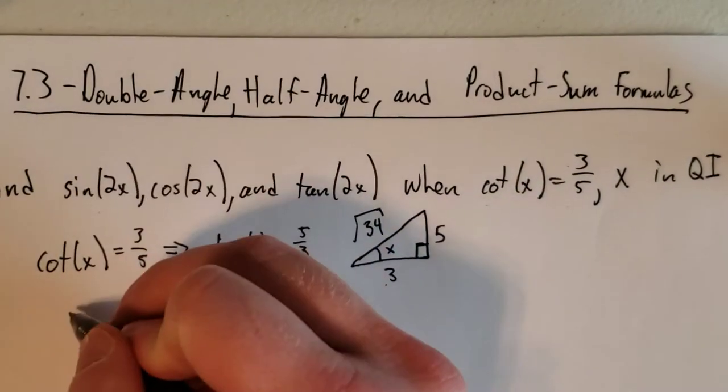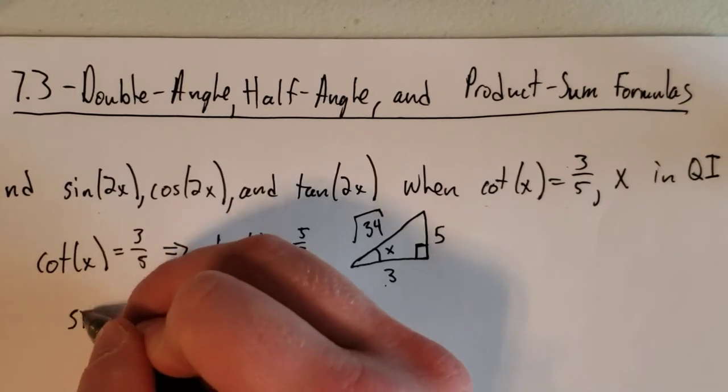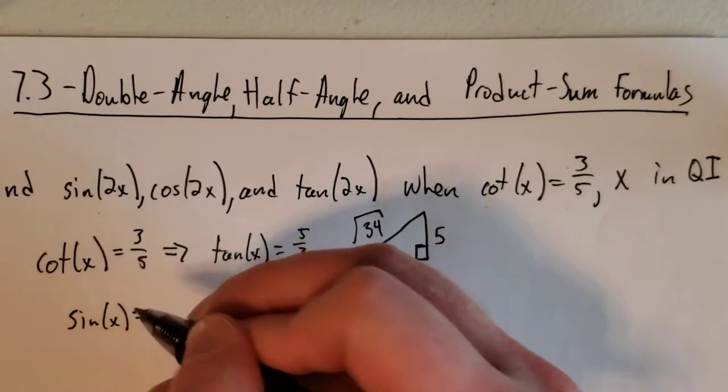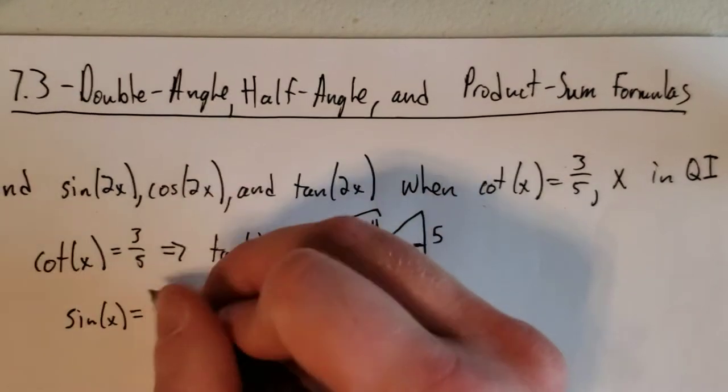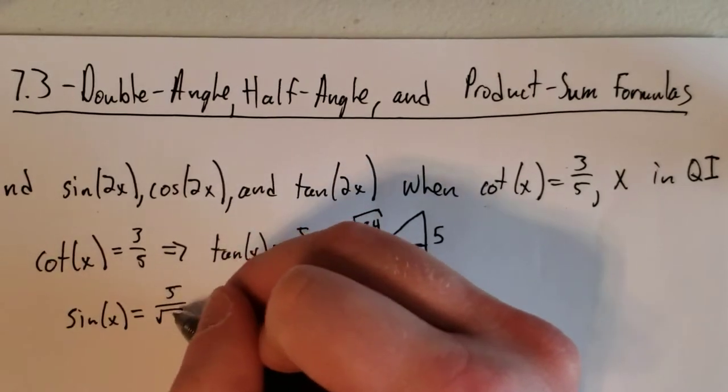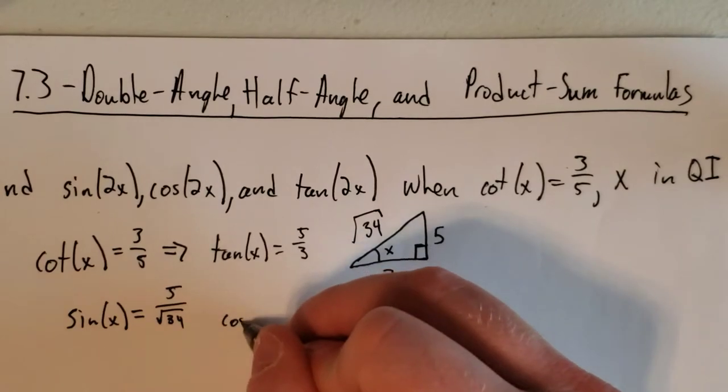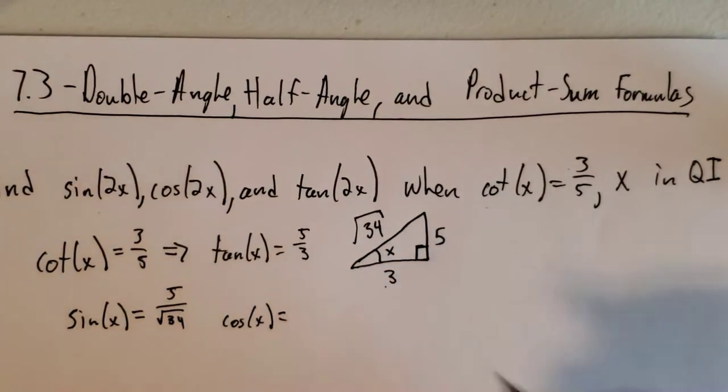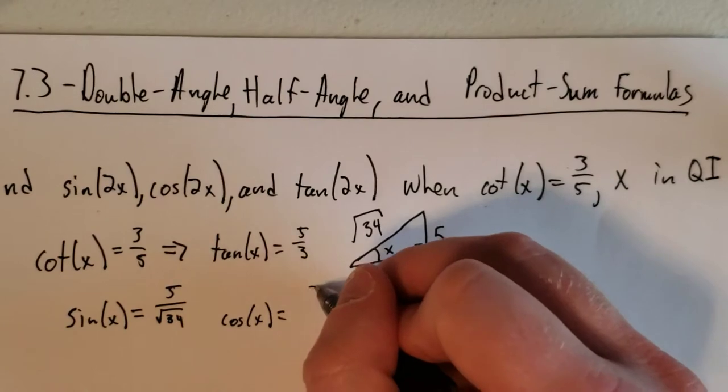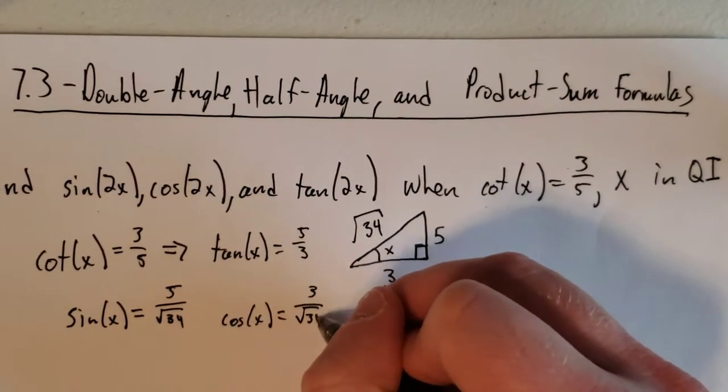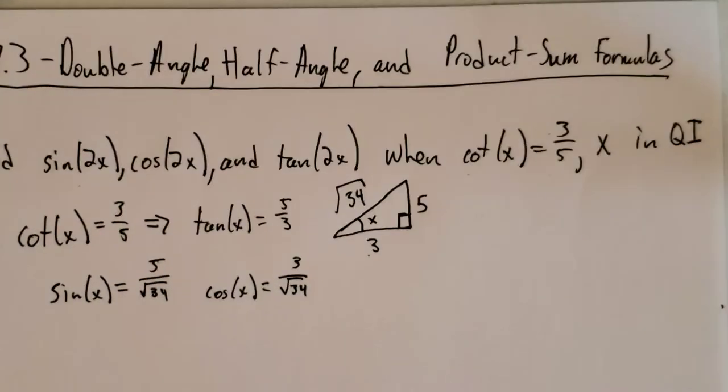So if we write this out, we get sine of x is equal to opposite over hypotenuse, so that is 5 over the square root of 34. And cosine of x is equal to adjacent over hypotenuse, so 3 over the square root of 34.